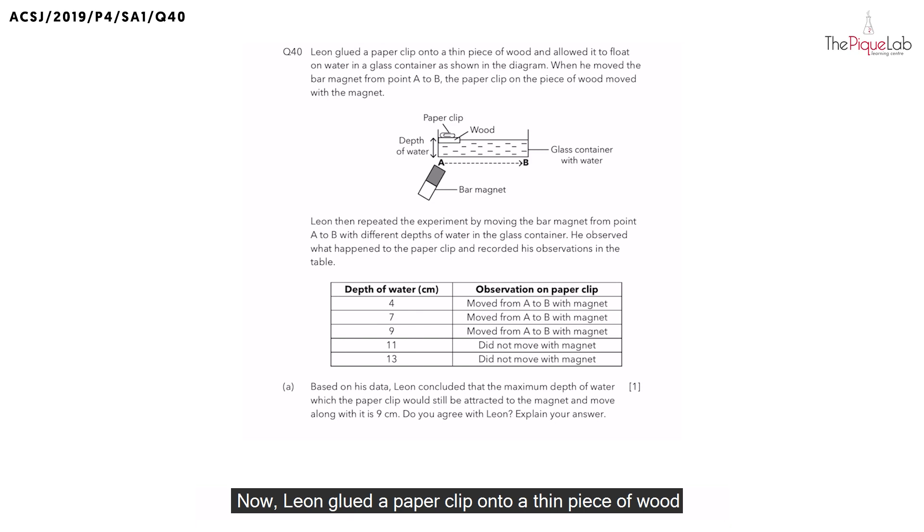Now, Leon glued a paperclip onto a thin piece of wood and allowed it to float on water in a glass container as shown in this diagram. When he moved the bar magnet from point A to B, he noticed that the paperclip also moved together with the piece of wood from point A to B. So why did this happen?